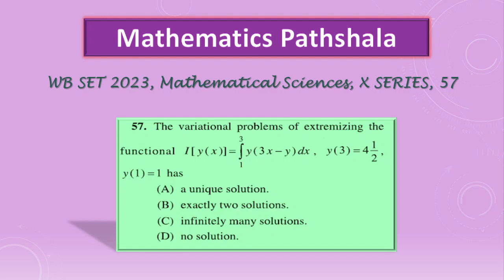The first one is question number 57 from booklet series X. The problem is the variational problem of extremizing the given functional with these initial conditions. Four options are given: it has a unique solution, exactly two solutions, infinitely many solutions, or no solution.